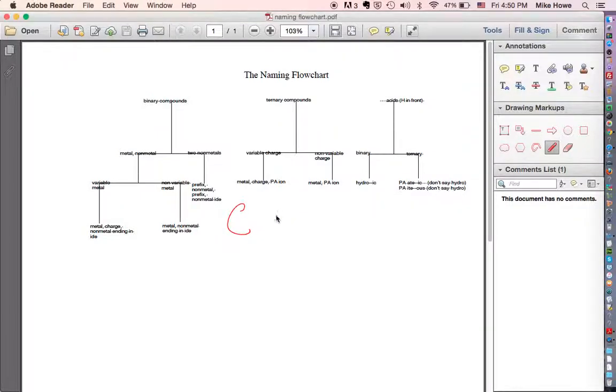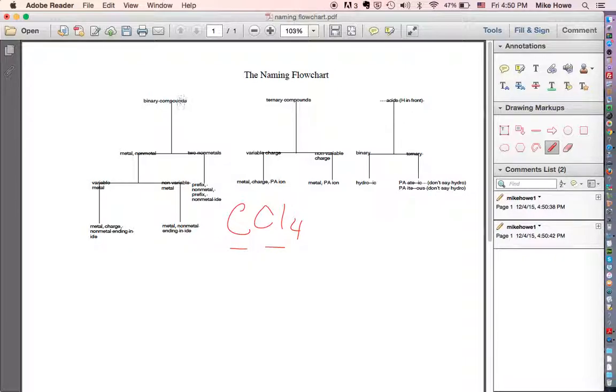So if I was given a formula like CCl4, you'd look and see, is it a binary or is it a ternary compound? Well, I see two elements, carbon and chlorine. So you'd come up here, is it binary, is it ternary, is it an acid? No, it's binary because it's got two elements, carbon and chlorine.